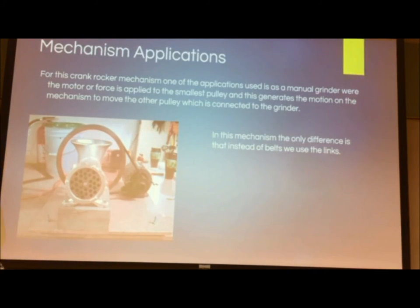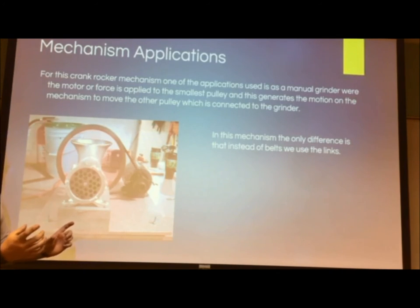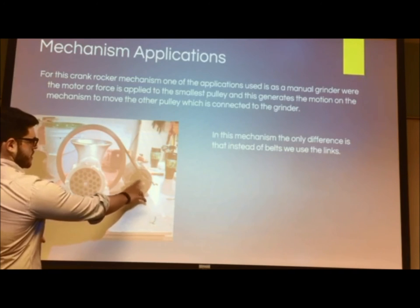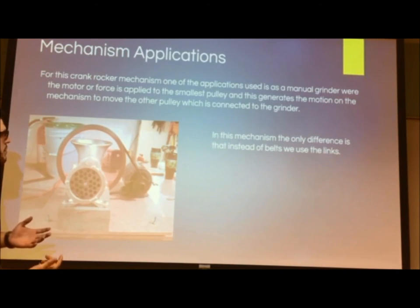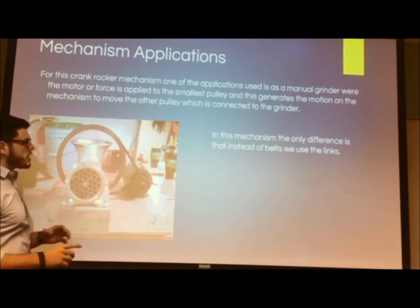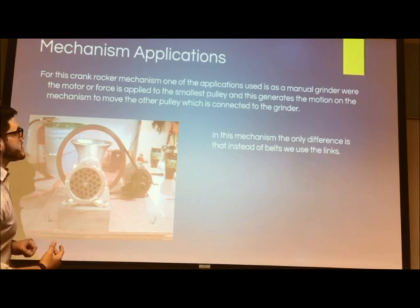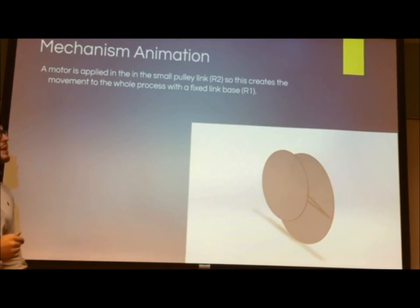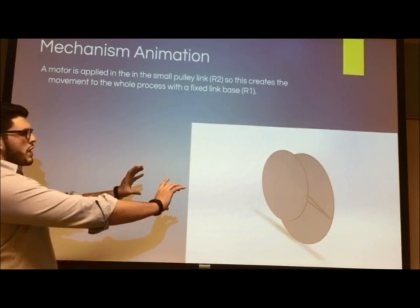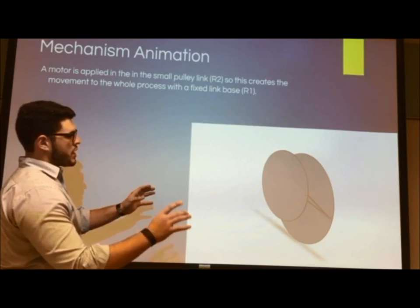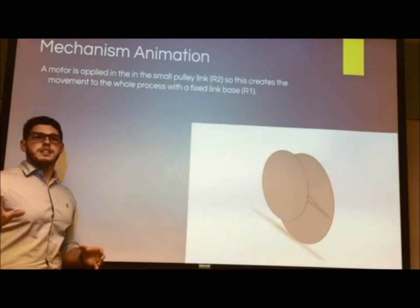A real-world application I found for this mechanism is a foot grinder. The main reason is that it has almost the same behavior — we have a small pulley and a large pulley. For the inner mechanism, instead of using belts, we use the links. As soon as the motor applies movement to the small pulley, this creates a change in torque and moves the large pulley, making the grinder work. For the animation, I modeled just the two pulleys: as the motor drives the small one, the large one begins moving, generating the same motion as the foot grinder, with the small pulley representing link R2.